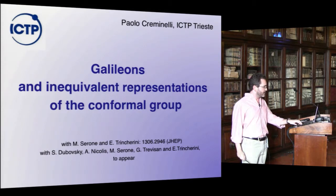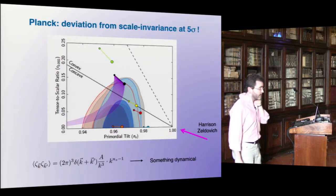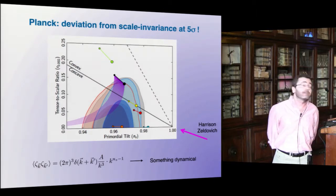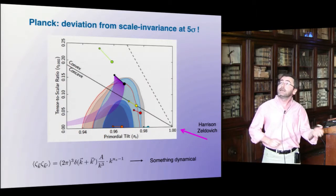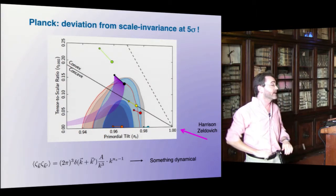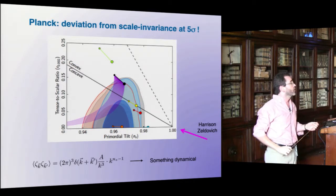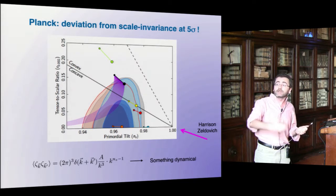Let me start with some motivation — why one should be interested in Galileans. I think this year in cosmology we made a big step forward. The Planck results, among many things, showed a deviation from scaling variance at the five-sigma level, which is some sort of psychological threshold, but also an important threshold.